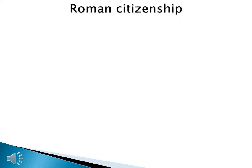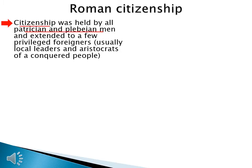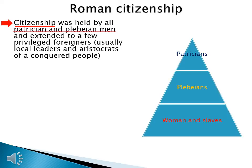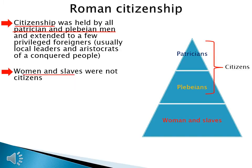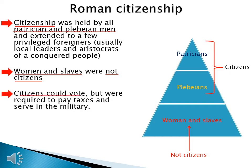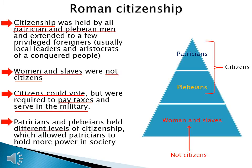One way to manage tension between patricians and plebeians was to grant certain people citizenship. Citizenship was held by all patrician and plebeian men and extended to a few privileged foreigners, usually local leaders and aristocrats of a conquered people. Looking at the class pyramid, patricians and plebeians are citizens, while women and slaves were not citizens. Citizens could vote, but were required to pay taxes and serve in the military. Patricians and plebeians held different levels of citizenship, which allowed patricians to hold more power in society.